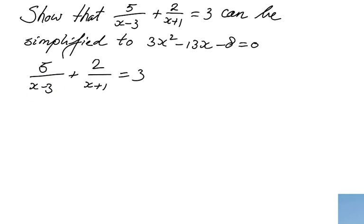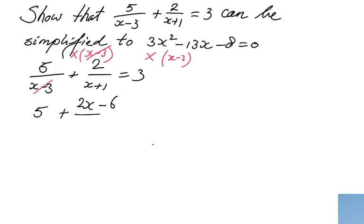We are going to multiply by that denominator x minus 3 — multiply both sides by x minus 3, the left side and the right side. This fraction is gone, and that's why we multiply by x minus 3. So we have 5, but be careful — we have to multiply the entire left side by x minus 3, so also this fraction times x minus 3. So I get 2 times x minus 6, that is 2 times minus 3, over x plus 1.